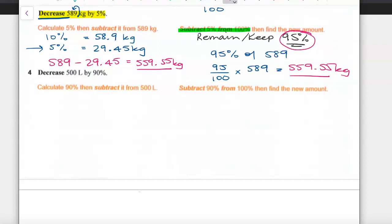So I'd like you to pause the video now and have a go at question 4. I want you to decrease 500 litres by 90%, so it means I want you to get rid of 90% of it. Have a go at method 1 or method 2, and then come back and have a look at both options and their solutions.